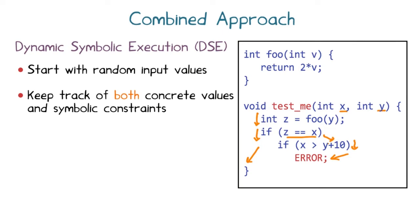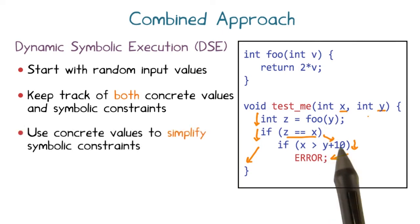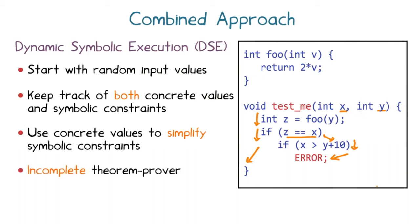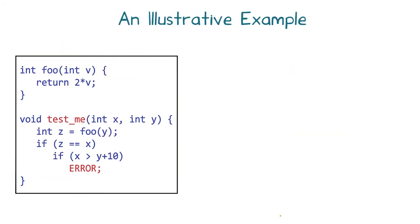There is one further subtlety. If a condition becomes complex enough that the solver cannot find a satisfying assignment, the solver plugs in the concrete values that DSE is working with to one or more variables in the constraints to simplify them. This strategy makes the constraint solver an incomplete theorem prover — it will never declare an unsatisfiable constraint satisfiable, but it may fail to satisfy some satisfiable constraints due to the simplification.